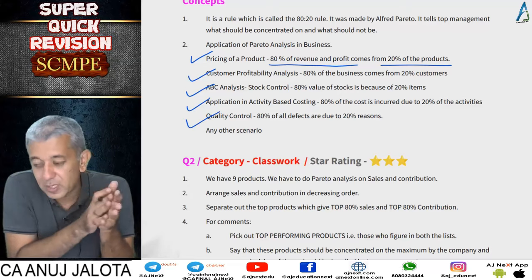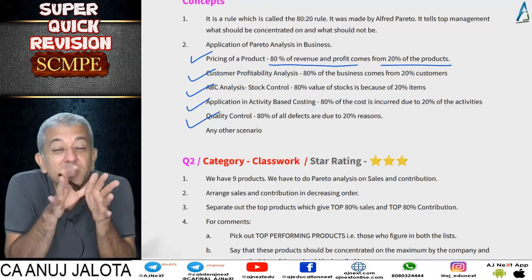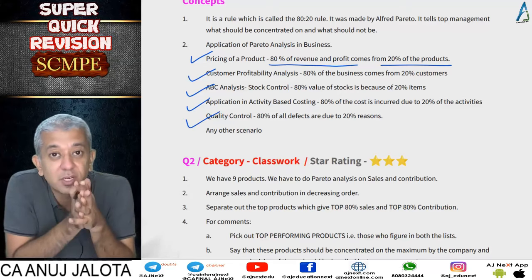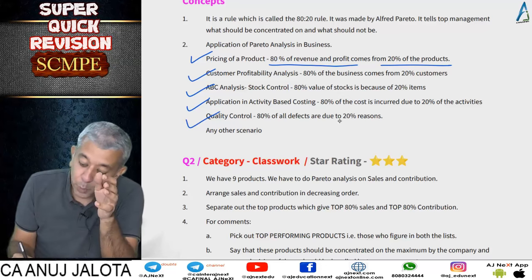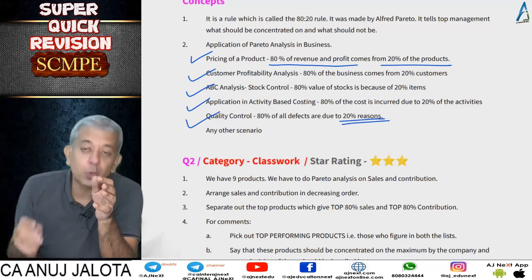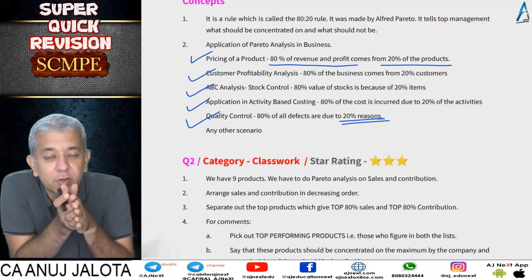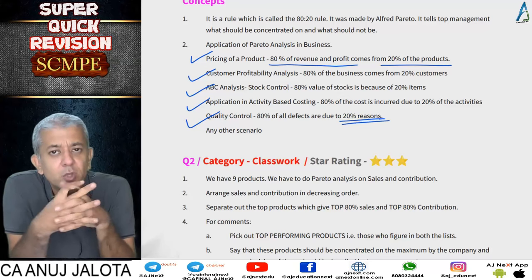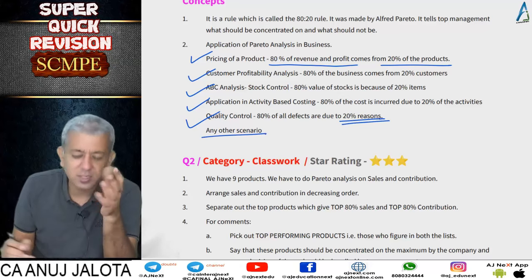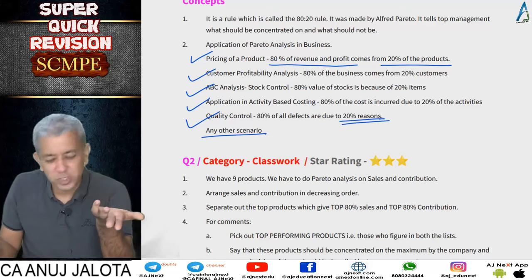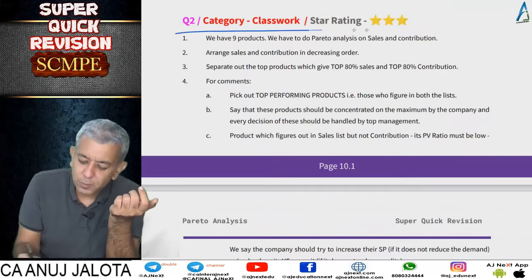If cost control is not done for those key activities, your overall costs will rise significantly. Fifth, quality control — this is very important: 80% of all the defects are due to 20% of the reasons. So the company should pay proper attention to those 20% of reasons. If you remove those reasons, 80% of defects in your products will also be eliminated. This is an open chapter, so Pareto analysis can be applied to any scenario.